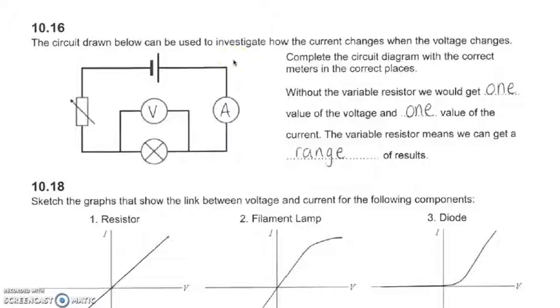We've said that voltage affects current, but how could we investigate that in an actual experiment? We could set up something like this: we can have a battery or a power pack, connect up some wires to a light bulb, put a voltmeter across it and an ammeter on that series circuit. Then we're going to put this variable resistor in our circuit.